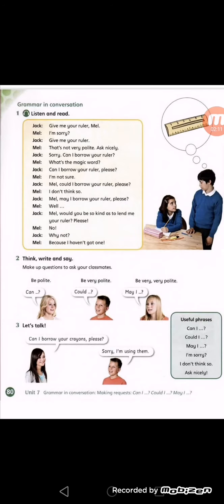Now open your pupils book page 80, grammar in conversation. Listen and read. Here we have a dialogue between Jack and Mel. Jack wants to borrow a ruler from Mel. So listen to this dialogue and follow please.